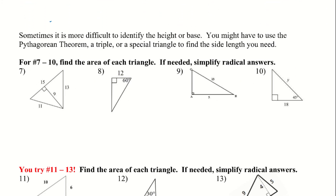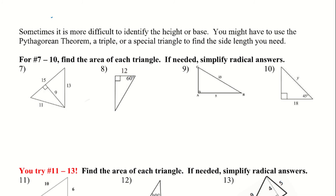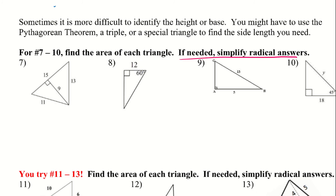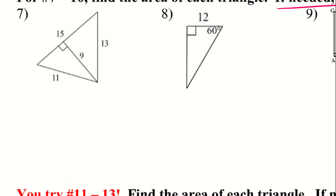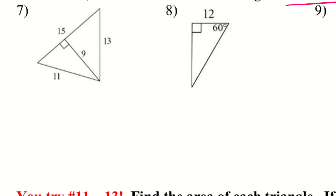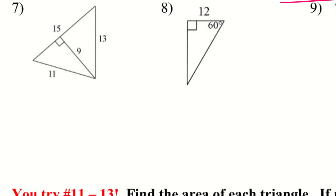Sometimes it is more difficult to identify the height or base. You might have to use the Pythagorean theorem, a triple, or a special right triangle to find a side that you need. If needed, simplify to radical answers — we want to avoid decimals when dealing with radical answers. For this problem, we're given every side, but remember all we need is the base and the height, so we just take the 15 and the 9.